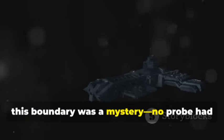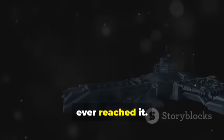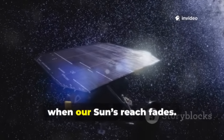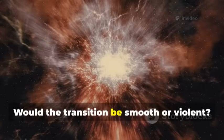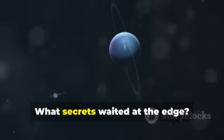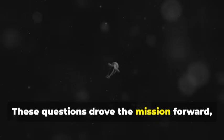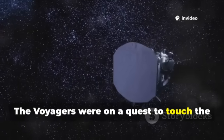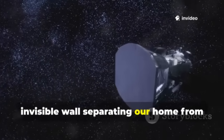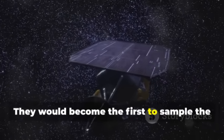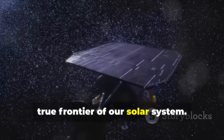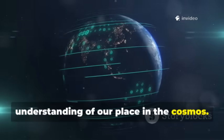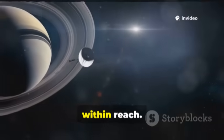For decades this boundary was a mystery. No probe had ever reached it. The Voyagers' next challenge, to cross the heliopause and measure what happens when our sun's reach fades. Would the transition be smooth or violent? What secrets waited at the edge? These questions drove the mission forward, long after the planets were behind them. The Voyagers were on a quest to touch the invisible wall separating our home from the galaxy. They would become the first to sample the true frontier of our solar system. The data they sent back would change our understanding of our place in the cosmos. The edge of the sun's domain was finally within reach.